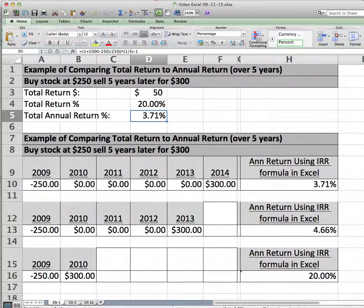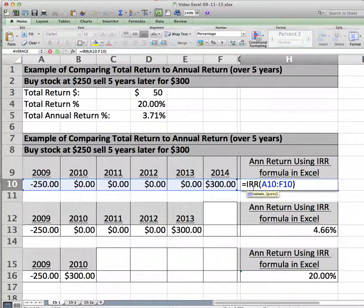Total annual return is also sometimes called compound annual growth rate. There's a way to use formulas in Excel to calculate this. So we use an IRR formula and it looks over these six years but five years of growth.